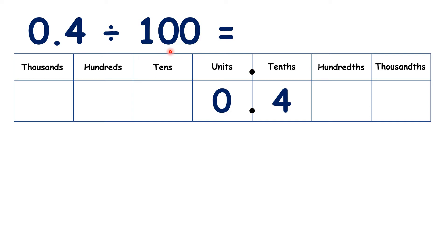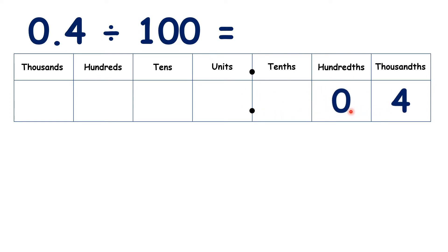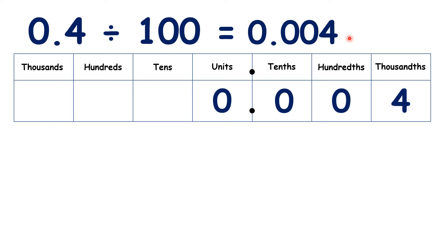Instead of dividing by 10, let's try dividing by 100. When we divide by 100, the digits move 2 place values to the right, rather than just 1. So if we move 2 places across, you can see that the 4 that was in the tenths is now in our thousandths. Because we can't have an empty units column, we need a 0, and we also need a 0 in our tenths to show 4 thousandths — the thousandths digit is always the third digit after the decimal point. So we write our answer as 0.004.